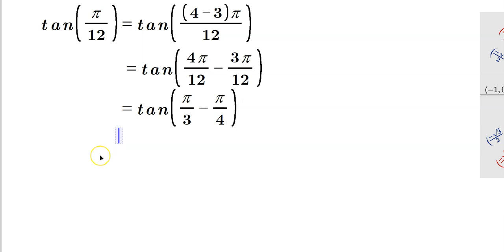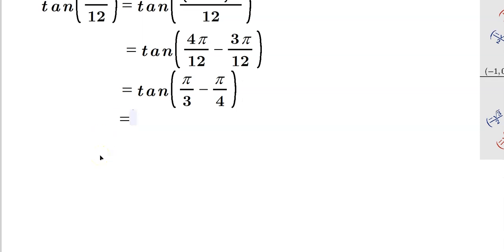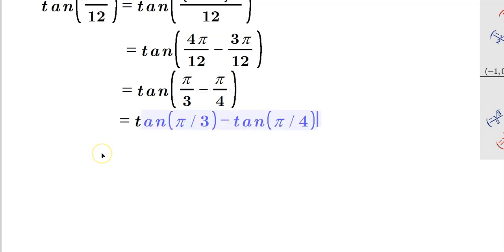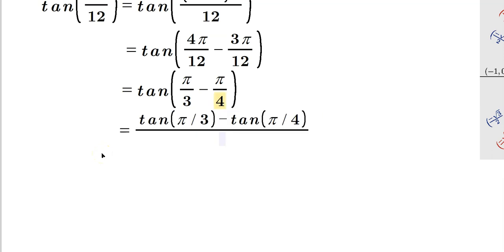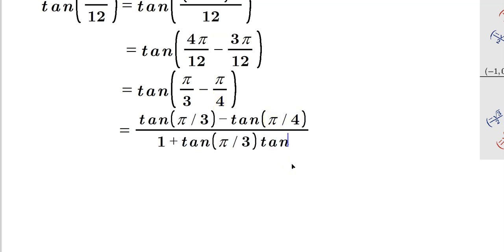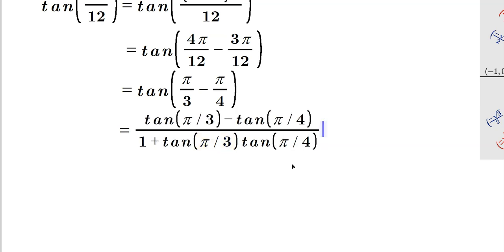Now we can apply the tangent difference formula, which tells you this is equivalent to writing the tangent of pi over 3 minus the tangent of pi over 4, all over 1 plus tangent of pi over 3 times tangent of pi over 4. We use those angles because each of them can be found easily from the unit circle.